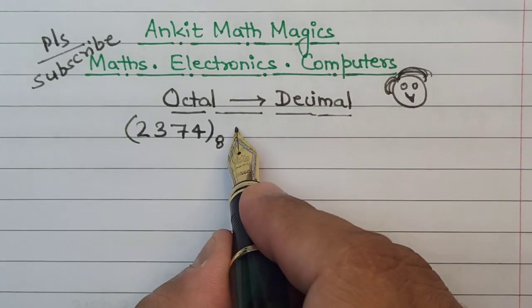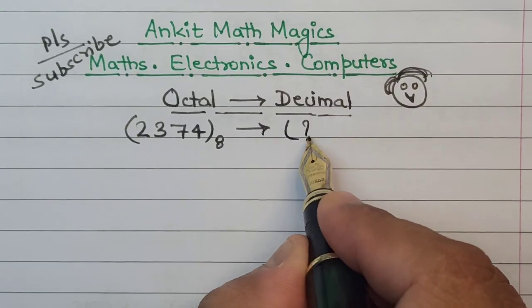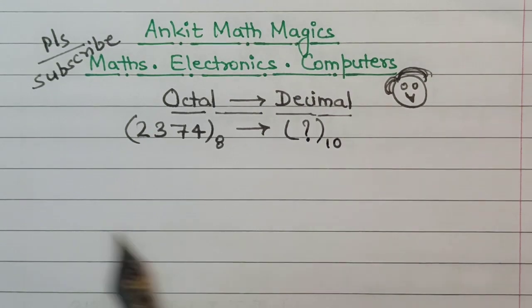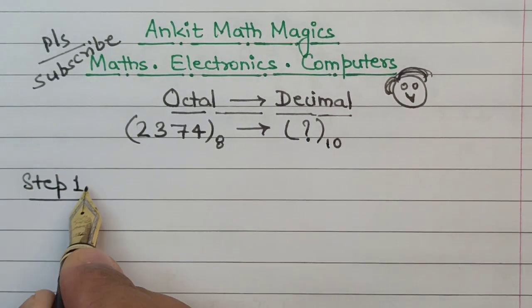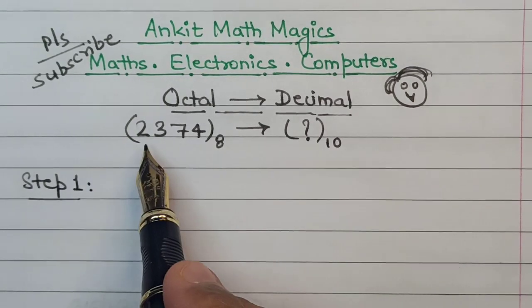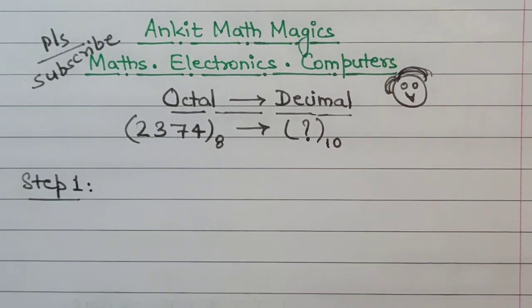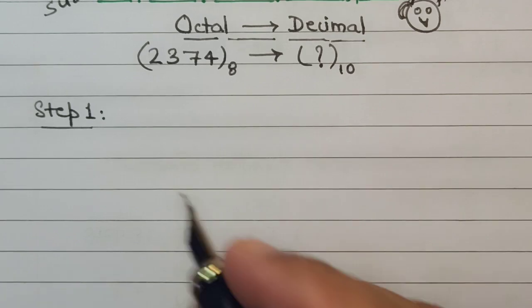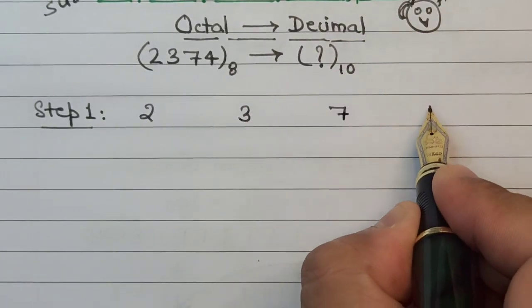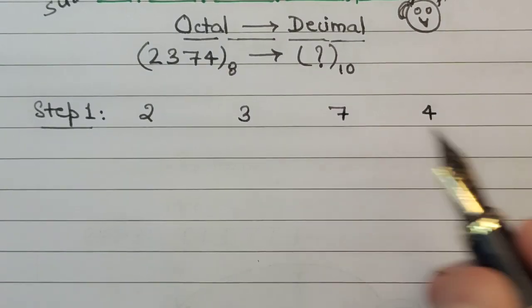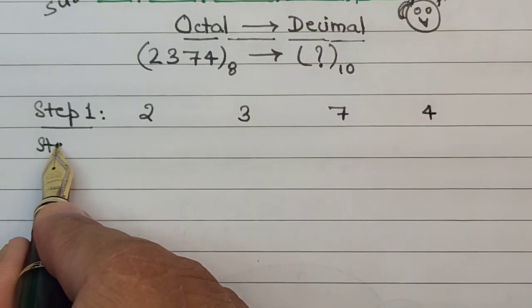We have to find a decimal equivalent of this number. So in the first step, what we do is we just write the numbers with proper spacing, so we have 2, 3, 7, and 4. In step number two, we write the digit 8 just below all these digits, so we have 8, 8, 8, and 8.